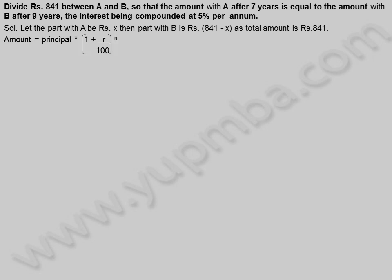Amount is equal to principal into 1 plus R by 100 whole power N. Amount with A at end of 7 years is equal to X into 1 plus 5 by 100 whole power 7.